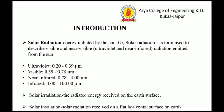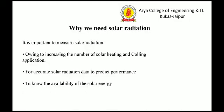Solar radiation is the energy radiated by the Sun. It is a term used to describe visible and near-visible radiation emitted from the Sun. There are four types of radiation emitted from the Sun: ultraviolet, visible, near-infrared, and infrared. Solar insolation is the radiant energy received on the Earth's surface — specifically, solar radiation received on a flat horizontal surface on the Earth.